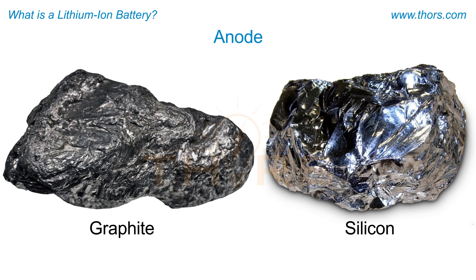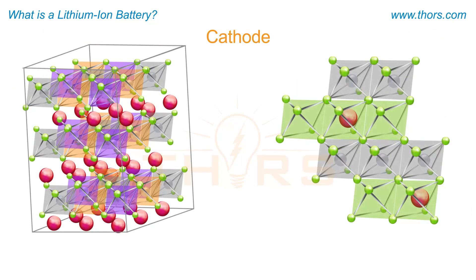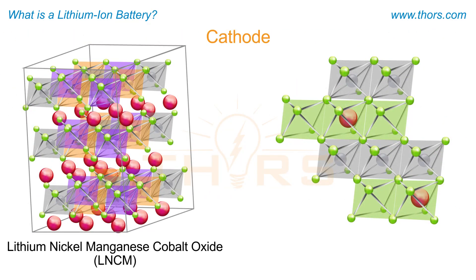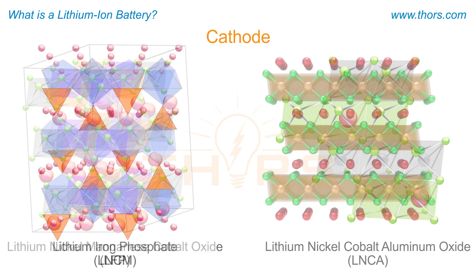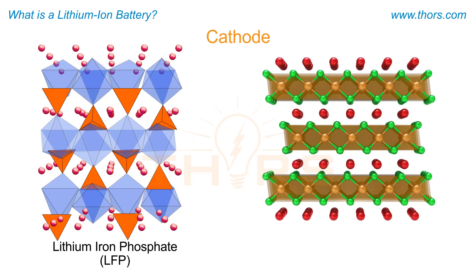For example, an anode may be graphite or silicon, and a cathode may be lithium nickel manganese cobalt oxide (NMC), lithium nickel cobalt aluminum oxide (NCA), lithium iron phosphate (LFP), or lithium cobalt oxide (LCO).